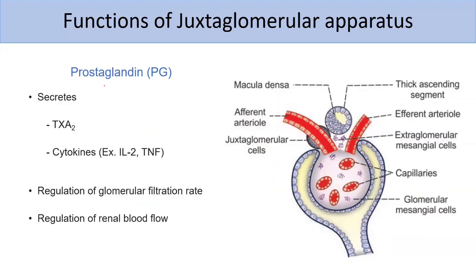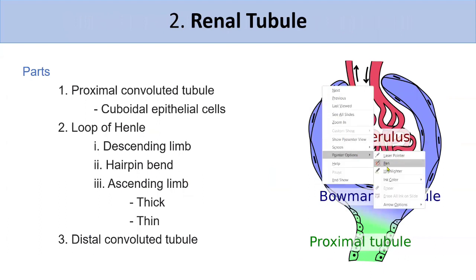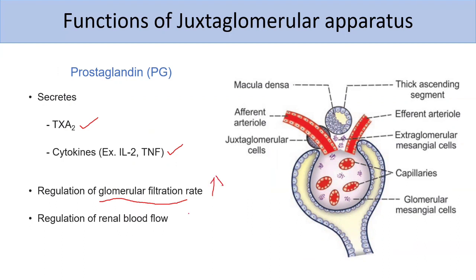Next, prostaglandin. It secretes two substances: thromboxane A2, which helps with coagulation, and cytokines, which are involved in inflammation. Prostaglandin also regulates the glomerular filtration rate and renal blood flow. If filtration rate is less, blood flow increases to maintain normal filtration. Prostaglandin is important for maintaining this balance.